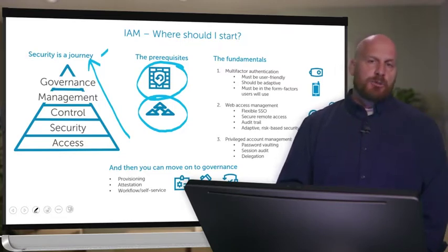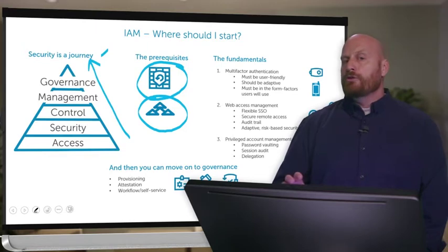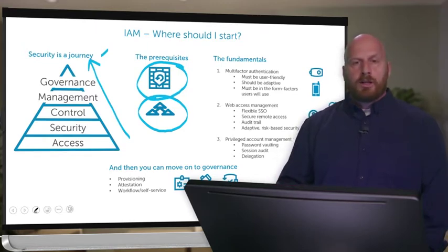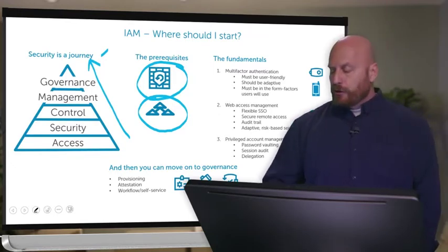There are three areas of identity and access management that we've found are the low-hanging fruit. If you start there, it'll put you well on the path to achieving what you're ultimately after.